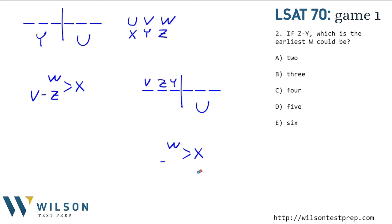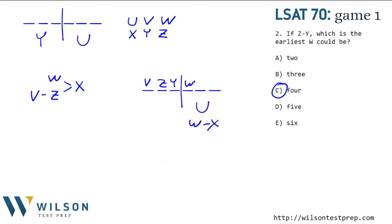That whole chain is done. All we have left is that W is before X and U is also in the last three. I'm going to write W before X. We don't know if U is four, five, or six, but W has to be before X. What's the earliest that W could be? It could be in the fourth spot — no problem with that. We could have W in the fourth spot and then U and X in either order in the last two spots. So C is the answer.